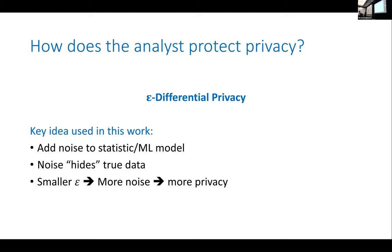In this paper we're using differential privacy as our privacy technique. I won't go into too much detail since there was already a great tutorial on this today. The key idea we're relying on is: one way to get differential privacy is to add noise to your statistic or model. This noise hides the true data of the users, and it's parameterized by epsilon. The smaller epsilon is, the more noise we add to the computation, meaning we get more privacy.